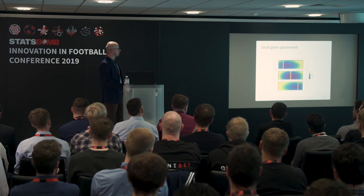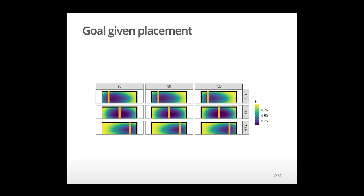This is the XG2 model output for shots from the left column, from the center, and from the right. The main takeaway is that there's little extra impact of the angle, once you account for the position of the goalkeeper — at least according to my model.